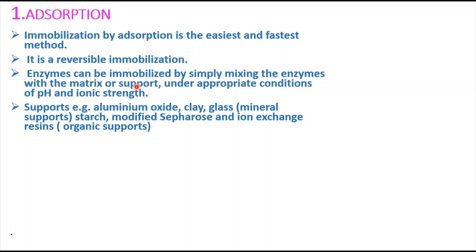In adsorption, the enzymes are immobilized by simply mixing them with the matrix or support under appropriate conditions. Proper pH and ionic strength must be maintained, otherwise there won't be any adsorption — meaning no binding between the enzyme and the matrix. We can then easily separate the matrix as well as the enzyme or cell. Adsorption is the easiest and fastest immobilization method compared to the other three.